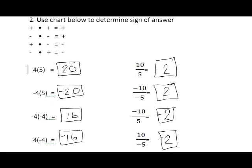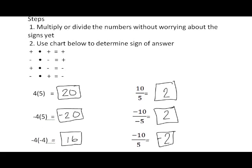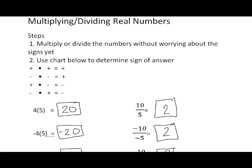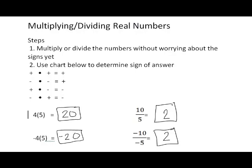This is how you multiply and divide real numbers — in other words, multiplying or dividing numbers with signs. Step one: multiply or divide the numbers without looking at the signs yet. Step two: use the chart to determine the sign of your final answer.